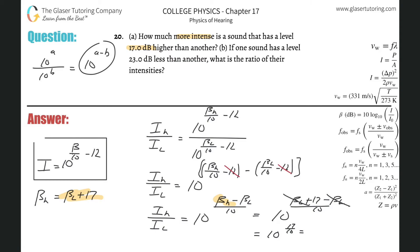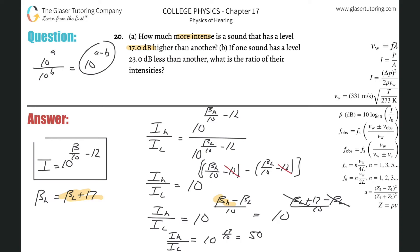And now I can finally find the relationship. 17 over 10 gives us 50.1. So basically the higher intensity relative to the lower intensity is 50.1 times larger. So that'd be the answer to letter A.